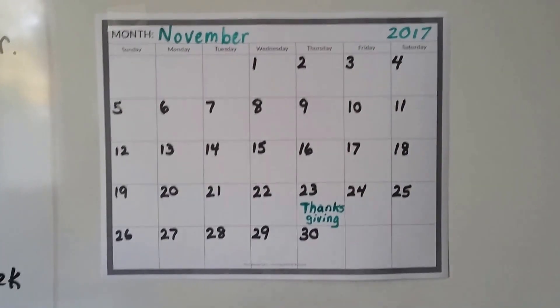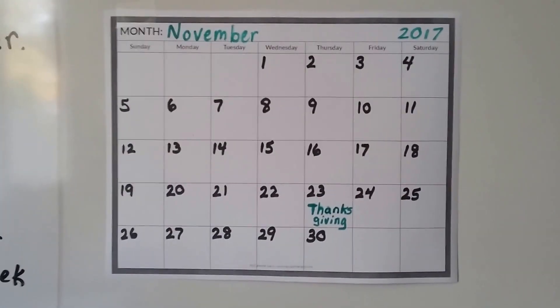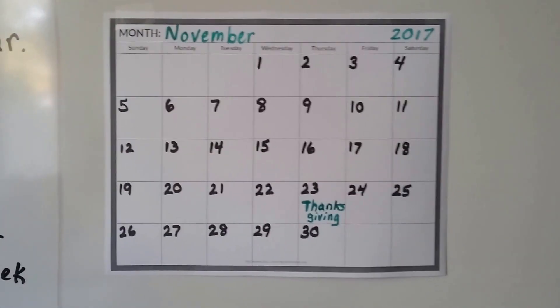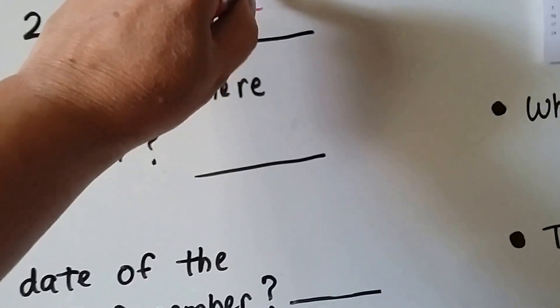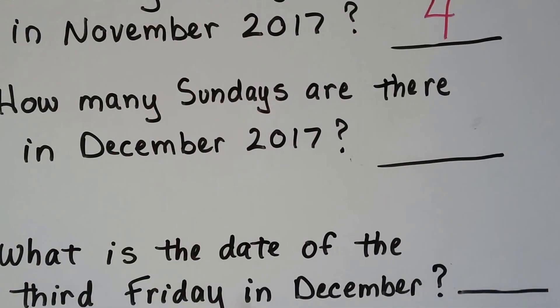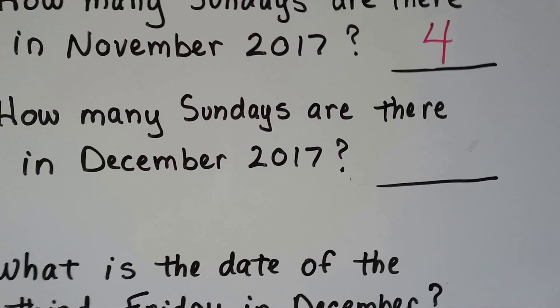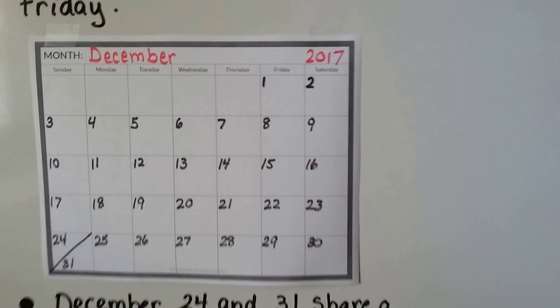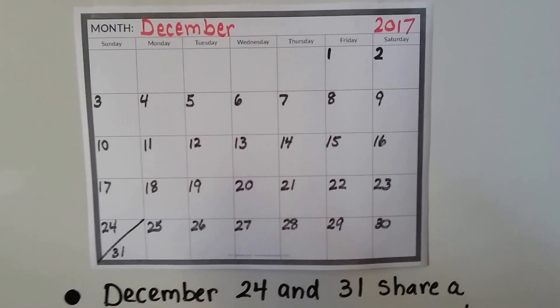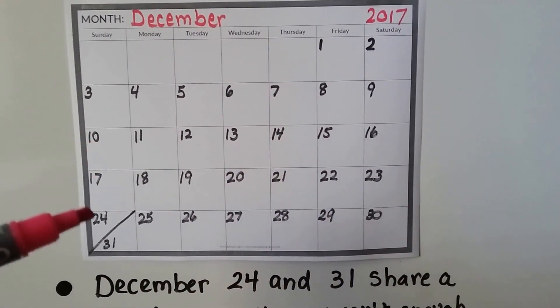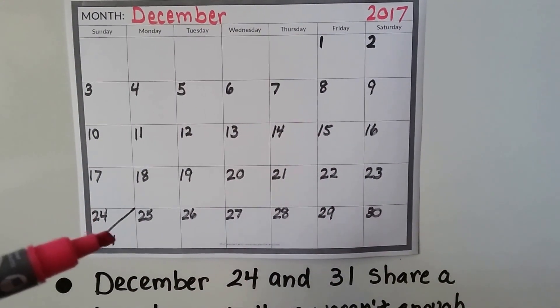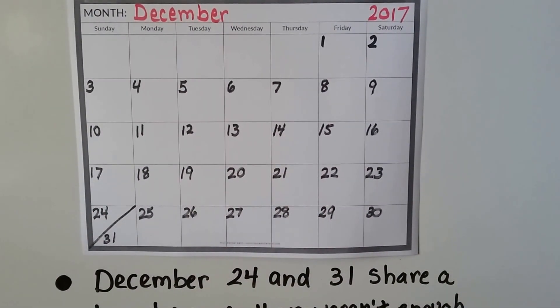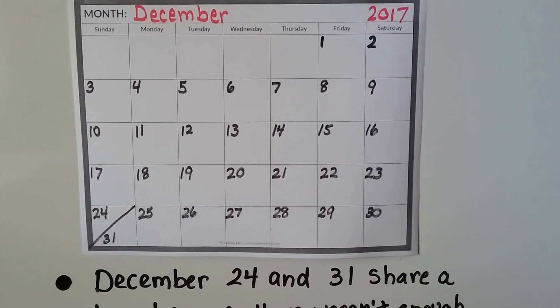So there are four Sundays in November — you don't count the ones that don't have a number in them. How many Sundays are there in December 2017? Counting the Sundays with numbers: one, two, three, four, and because this is sharing a box, that's five. There are five Sundays in December 2017.